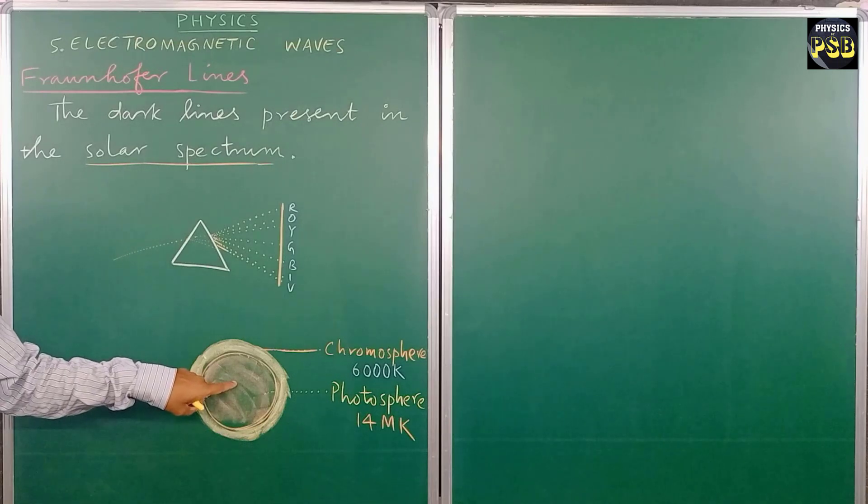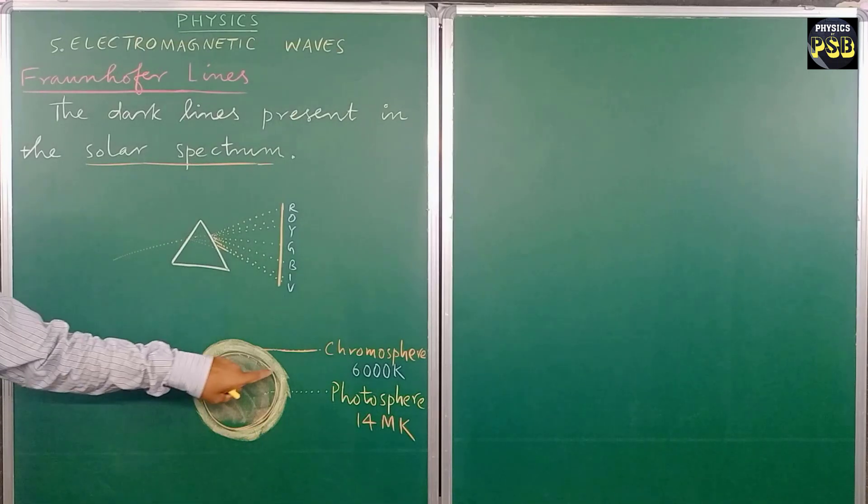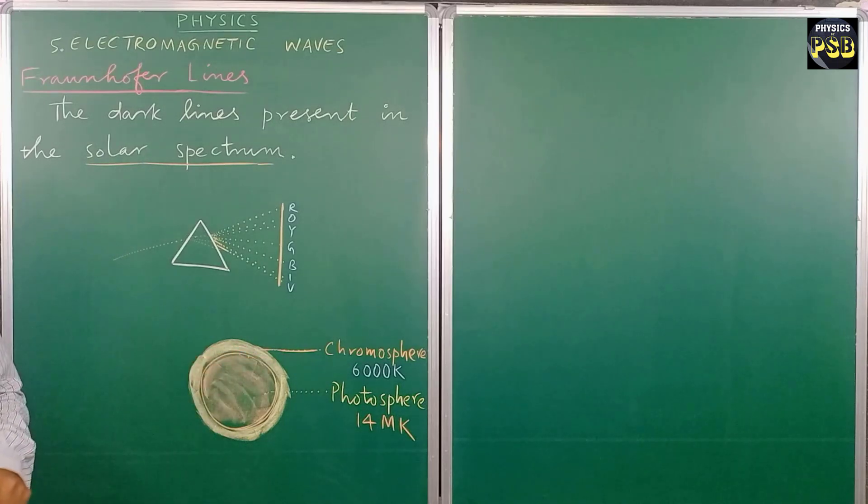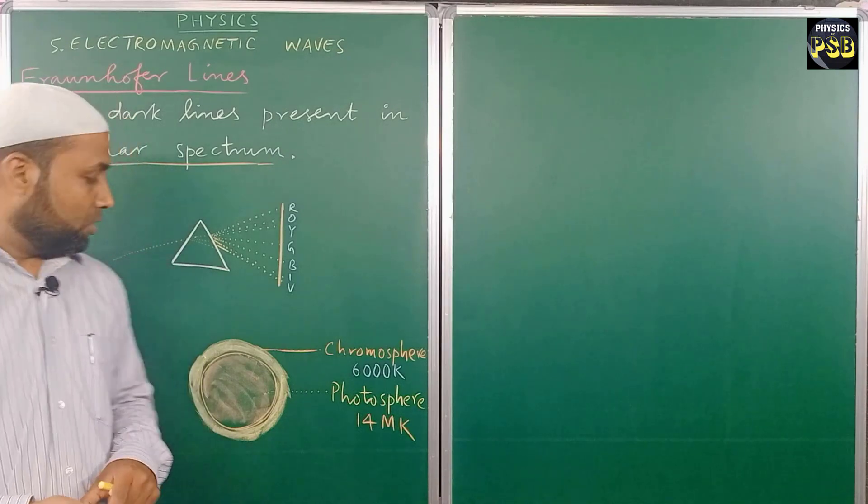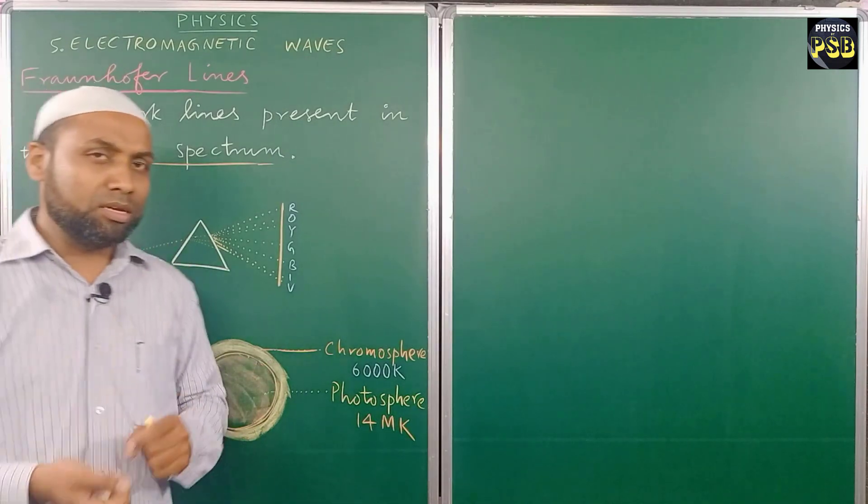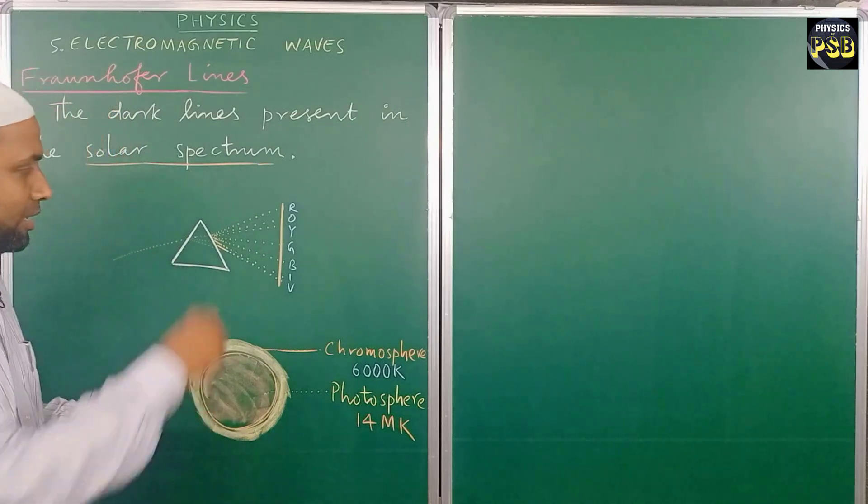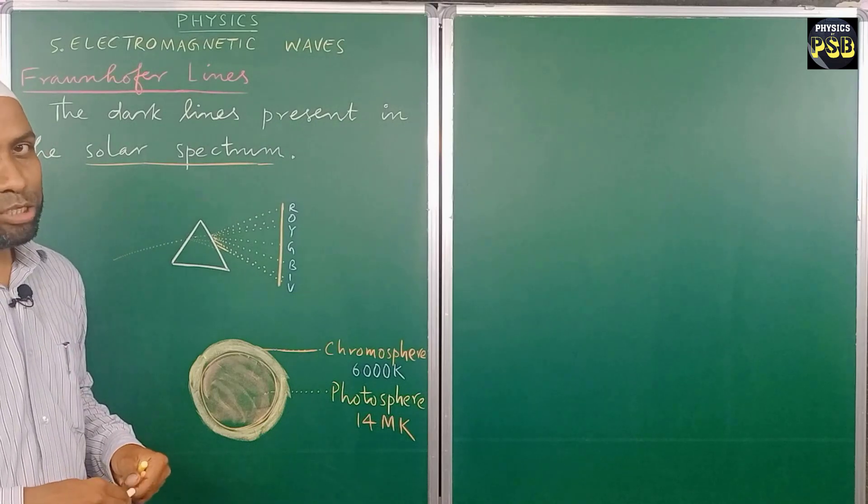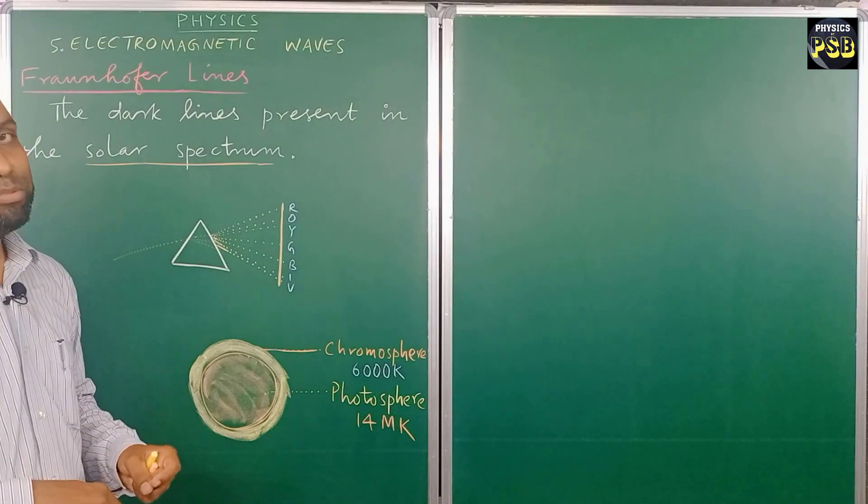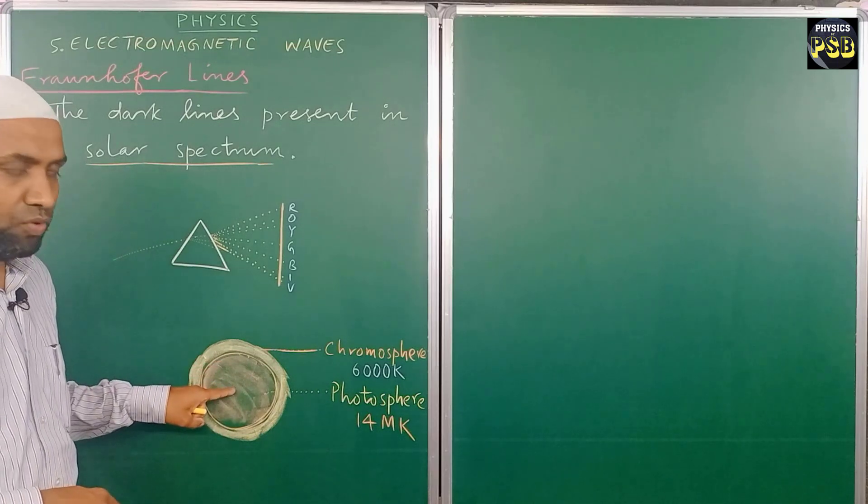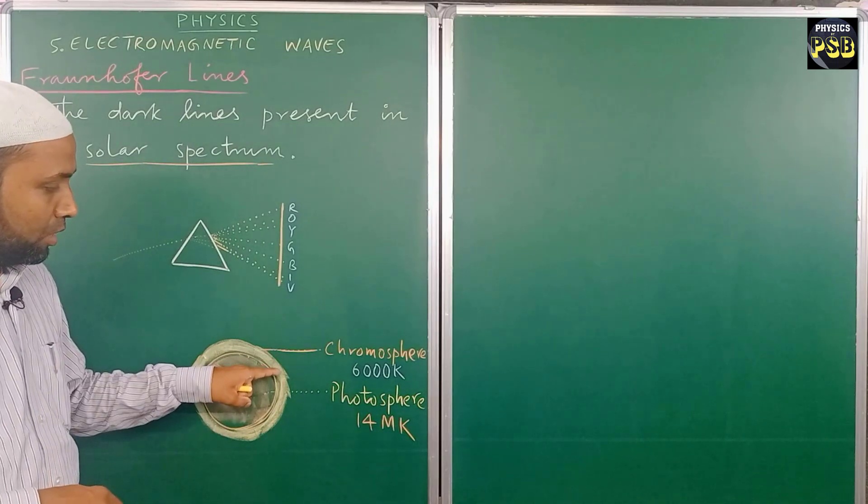The light which comes out of the photosphere has to pass through the chromosphere before it reaches us. So whatever element is present in gaseous form in the chromosphere absorbs the light. As a result, dark lines are obtained on the solar spectrum.